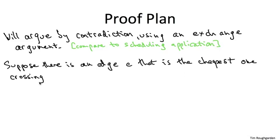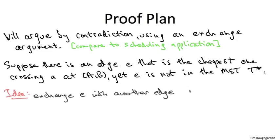So specifically, if we argue by contradiction, we assume that the cut property is false. So let's just make sure we understand what that means. If the cut property is false, then there's a graph, and there's an edge, which actually is the cheapest crossing some cut, and yet, that edge does not belong to the minimum cost spanning tree T star. The plan then is to exchange this missing edge E with some edge that is in the tree T star, which is more expensive, thereby getting a better spanning tree, providing the contradiction.